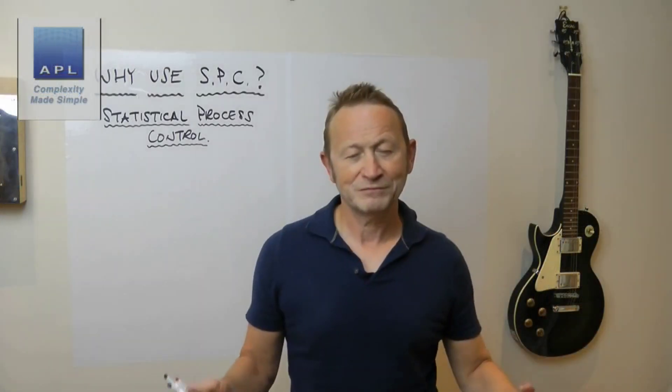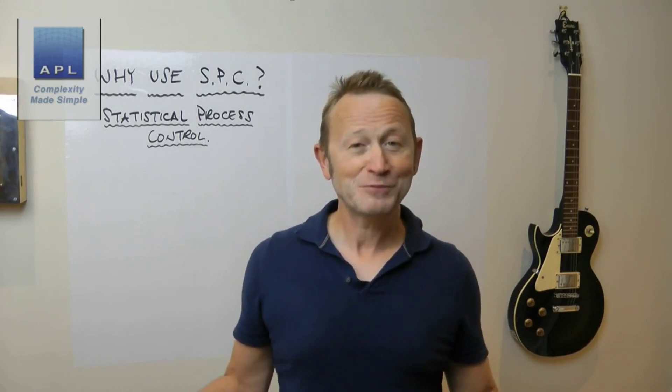Welcome to Complexity Made Simple, my name is Paul Allen. Before we get into today's video, I'll remind you of three books on sale: 'Drink Tea and Read the Paper' for green belts and black belts, 'Design of Experiments for 21st Century Engineers,' and 'Statistical Process Control for Small Batch Production.' They are all available from lulu.com — links are in the video below.